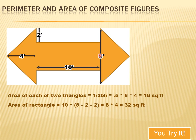So the area of the rectangle is 10 by 8 minus 2 minus 2, or 8 by 4, or 32 square feet. And the combined area would be 16 square feet plus 32 square feet or 48 square feet.